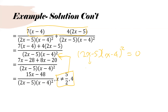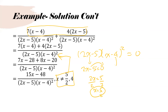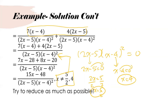For restrictions, I go back to the common denominator (2x minus 5)(x minus 4) squared and set it equal to zero. Setting 2x minus 5 equal to zero: 2x equals 5, so x equals 5 over 2. Setting x minus 4 equal to zero: x equals 4. So the restrictions are x cannot equal 5 over 2 and x cannot equal 4. Always try to reduce as much as you possibly can after this.